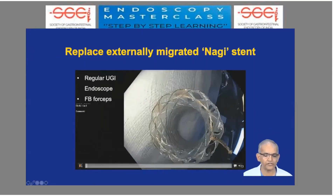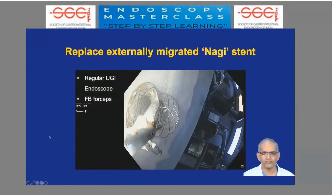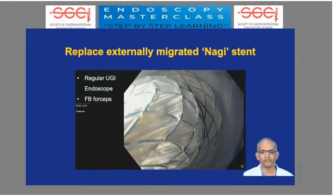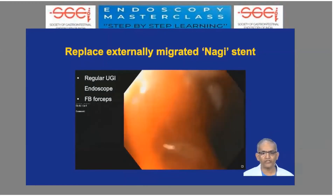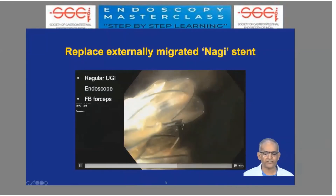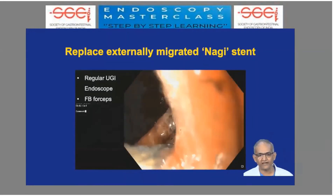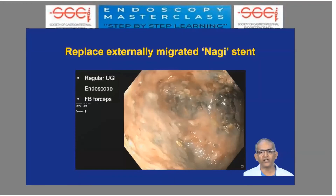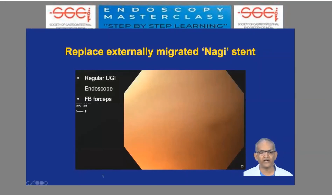An important thing to show is replacement of an externally migrated Nagi stent. This requires only a regular upper GI scope and a foreign body forcep. Through the endoscope, the forceps come out, you squeeze and clean the stent that came out during necrosectomy, pull it back inside the channel of the scope, and take this loaded scope inside. You push out the forceps so the inner flange opens inside the cavity. Pulling back the scope, you reposition and place the stent in the original place and continue the procedure. Healthy granulation tissue with minimal debris is the end point of necrosectomy.